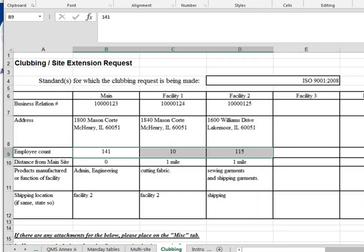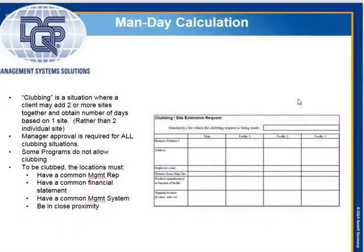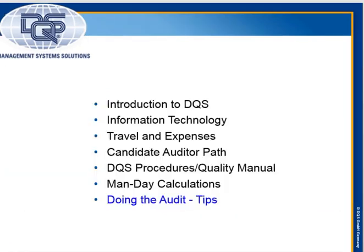That's a short demonstration of what the QF form looks like. I highly urge you, as you go through your candidate auditorship, to spend some time talking to the lead about the QF and make sure you understand how it works. That completes the section on mandate calculation. In the next section, we're going to talk about doing auditing for DQS, and I'm going to go through a few tips. Thank you.